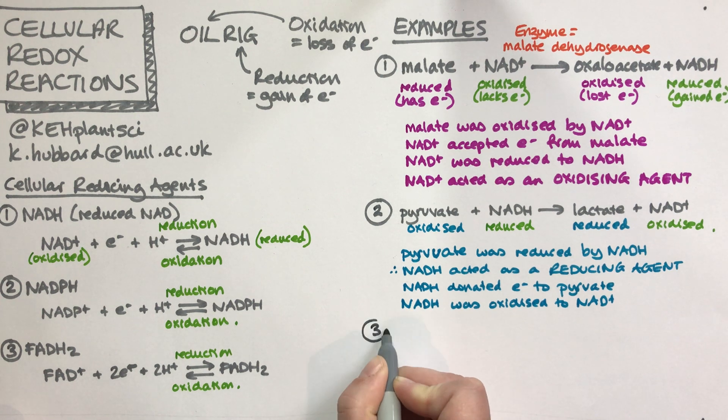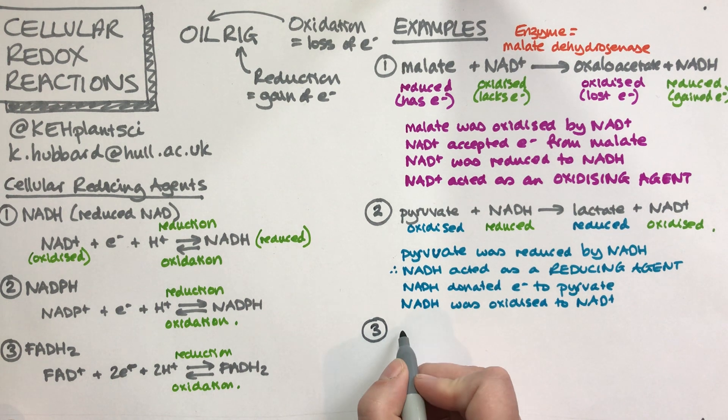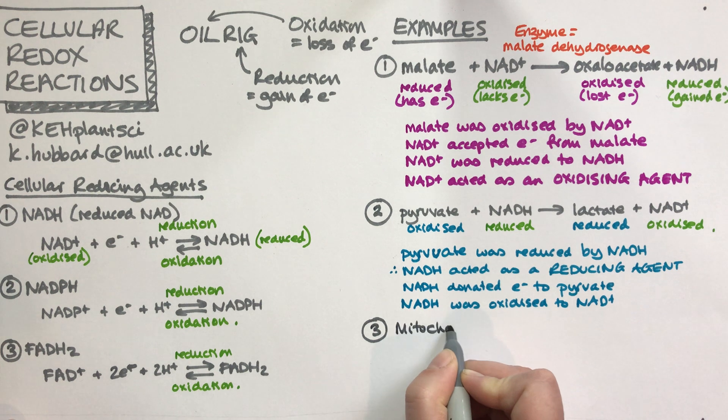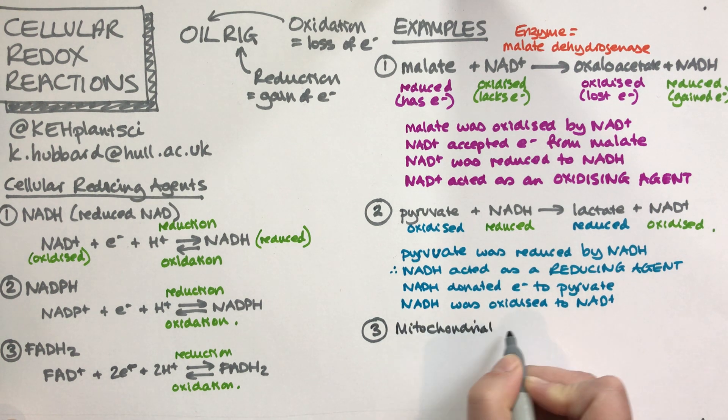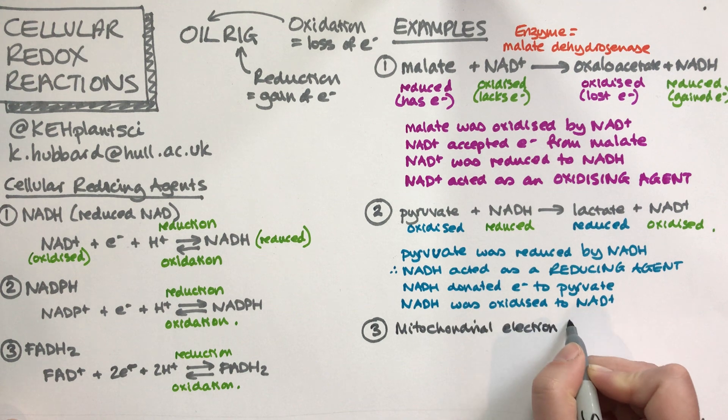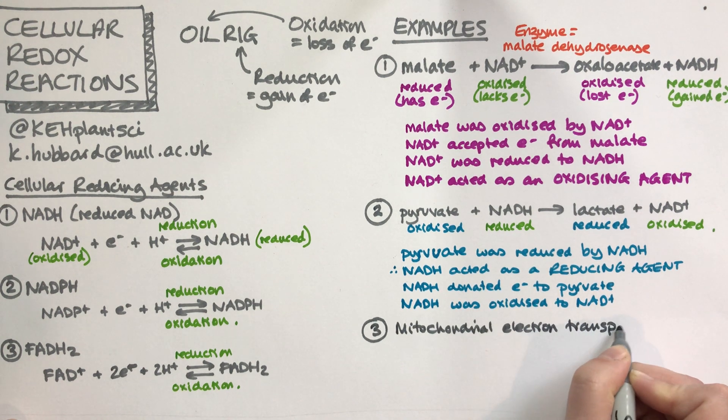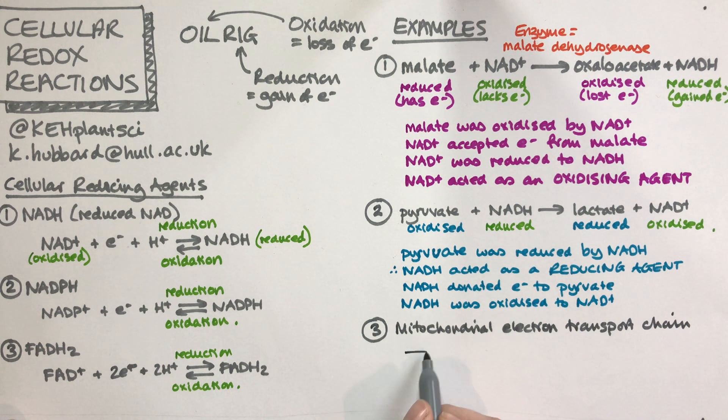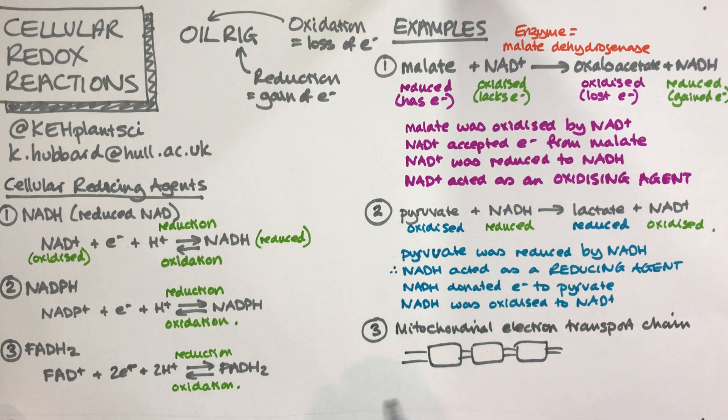The other example that we have in terms of using NADH is, of course, in the mitochondrial electron transport chain. There are other videos about respiration overall. This is a process that happens in the mitochondrial membrane. There's a series of complexes that are then used to power the ATPase.